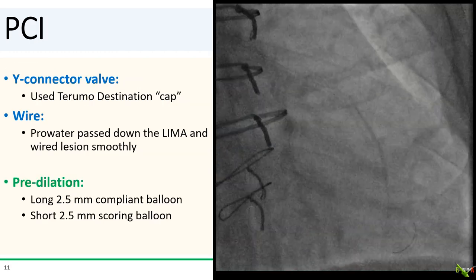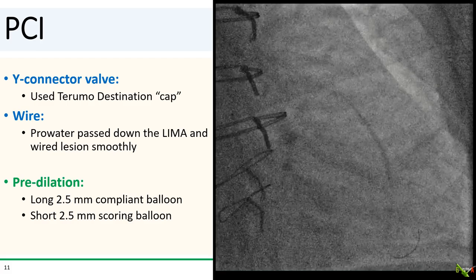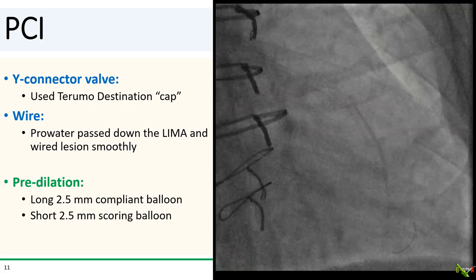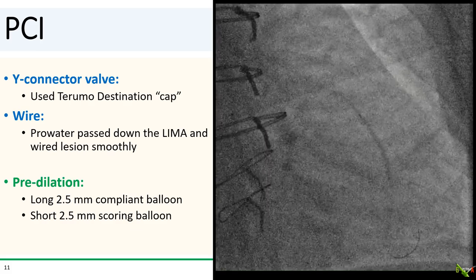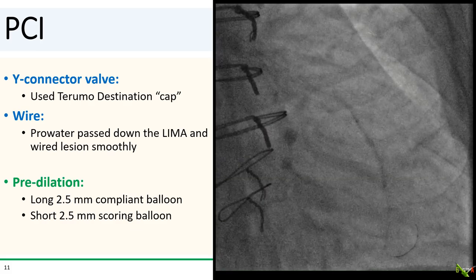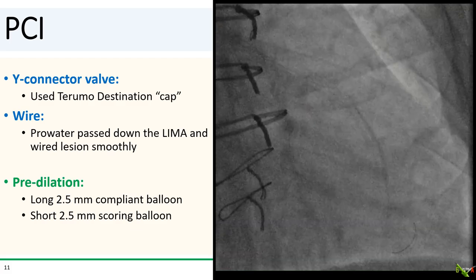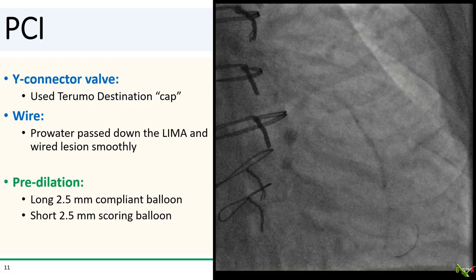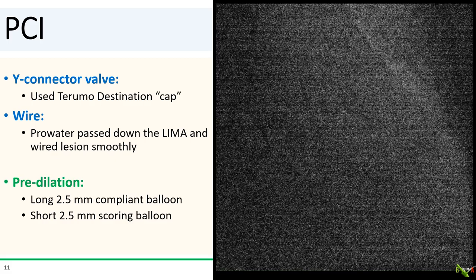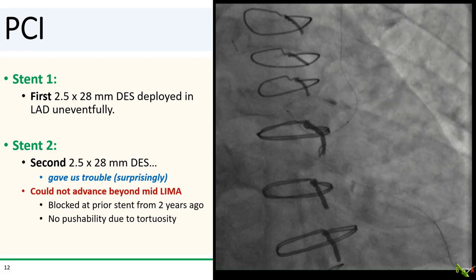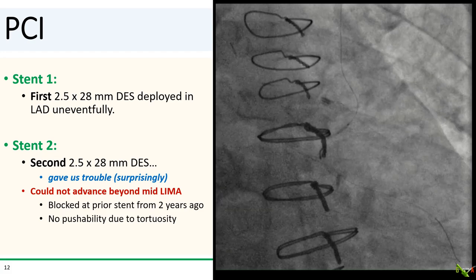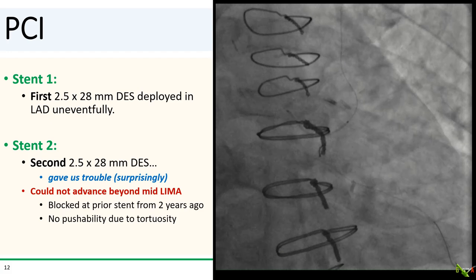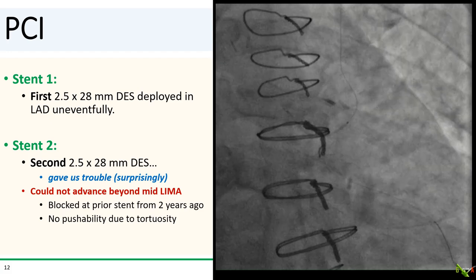In our case, we found that we had enough reach using the cap of a Terumo Destination sheath. We passed a Prowater wire fairly easily down the LIMA and into the distal LAD. Balloons passed pretty easily as well, and we dilated the LAD with both compliant and scoring balloons. It was a long segment of disease in the LAD, so we thought we needed two stents. The first stent, a 2.5 by 28 mm DES, passed easily and was deployed in the mid-LAD.